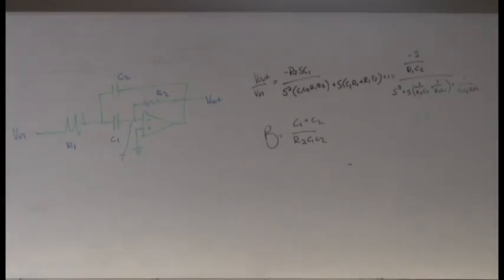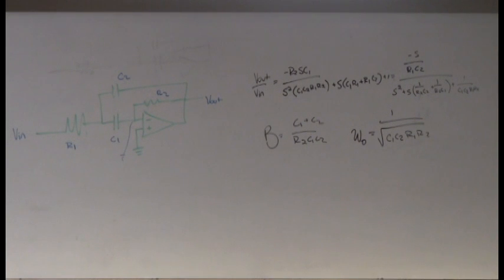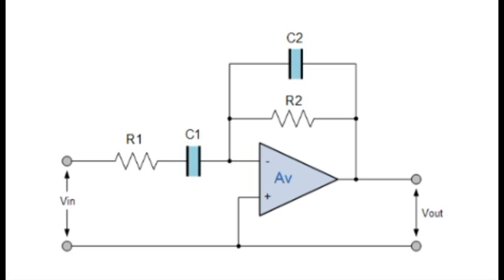From there, we simplified the equation and were able to pull out the beta value and omega naught. Although these filters are called infinity gain, as physical devices the gain is actually finite, and we're able to control it via the capacitor and resistor values. By tweaking these components, we wind up changing the peakiness of our pass band.